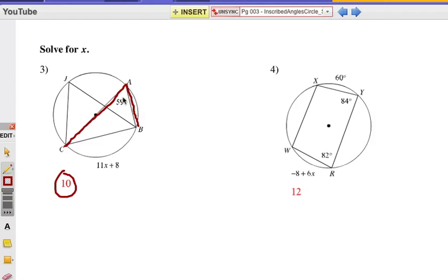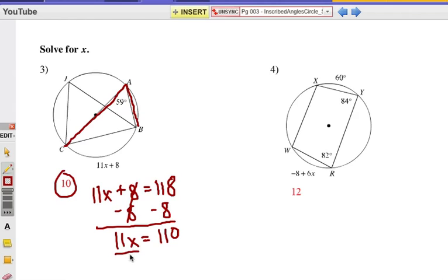The double 59 would give us 118. And so, 11x plus 8 must be 118. Let's solve for x. Subtract 8 on each side. And then divide each side by 11. A couple of steps in an algebra equation there. And the answer is 10.